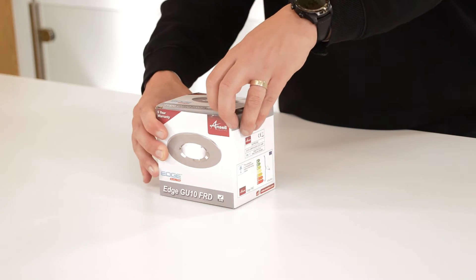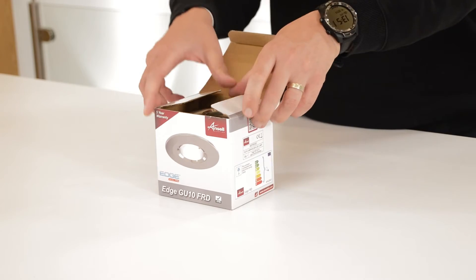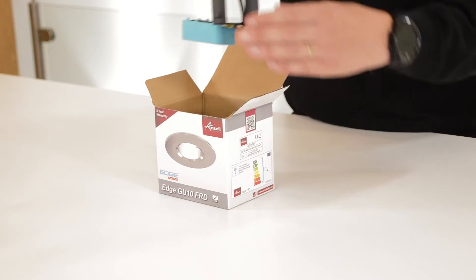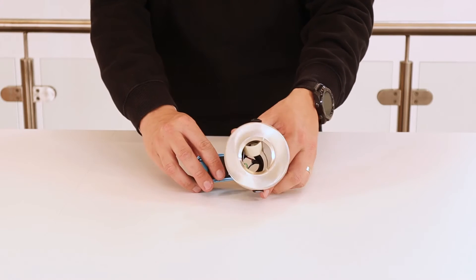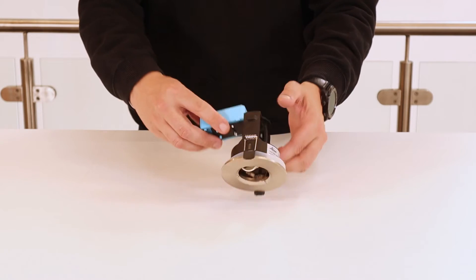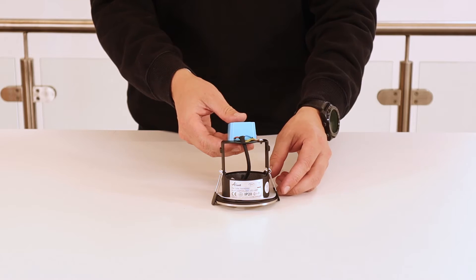The Edge is a fire rated downlight and is fully fire tested for 30, 60, and 90 minutes for all ceiling types to meet Part B of building regulations. It is also tested to Part C for moisture and Part E for acoustic.